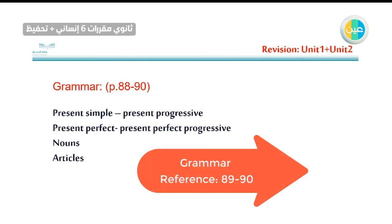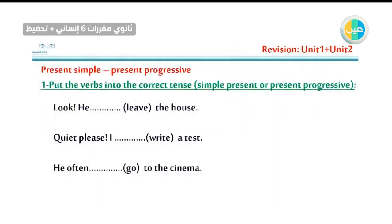Present simple, present progressive — this is the first exercise we will do. Then we will do more exercises about present perfect and present perfect progressive. Then nouns, and finally articles. Let's start with the present simple and present progressive. Put the verb into the correct tense: simple present or present progressive.